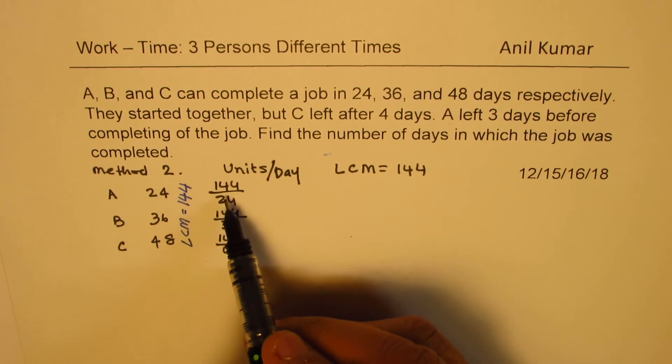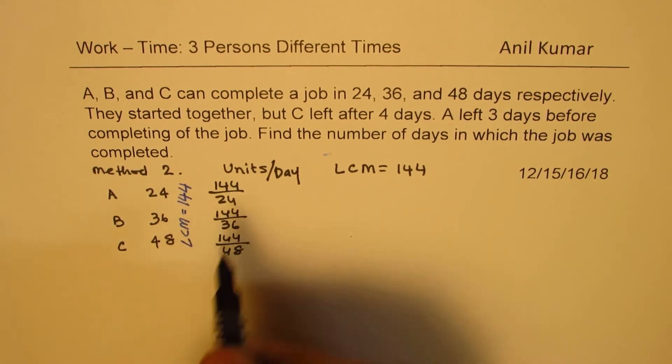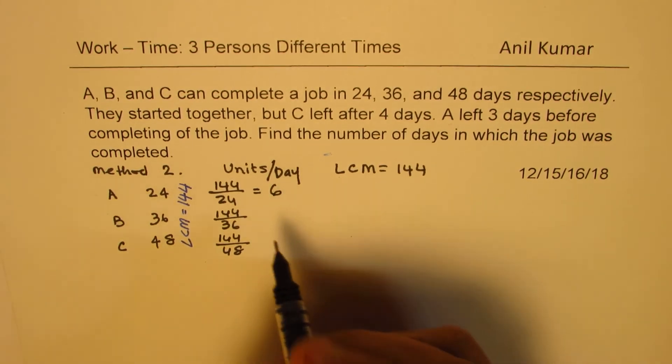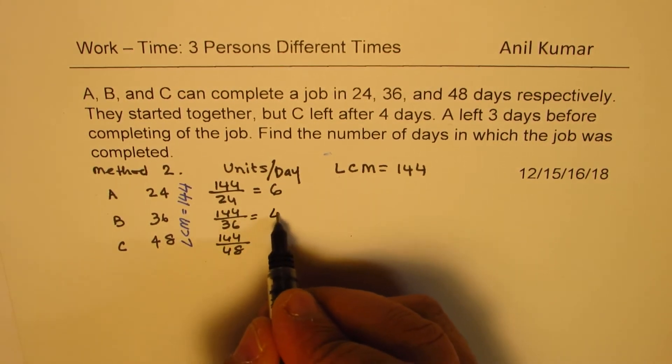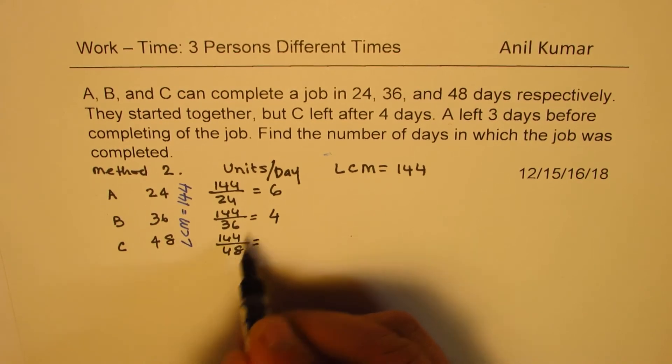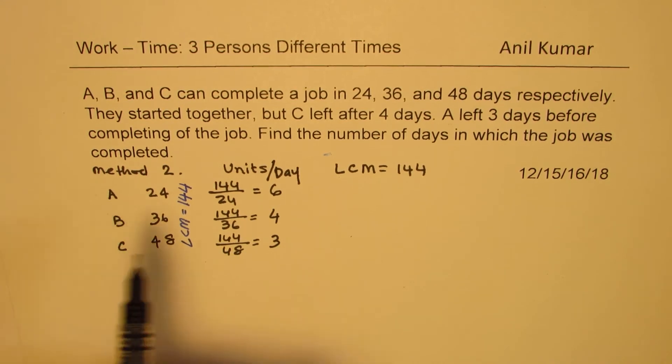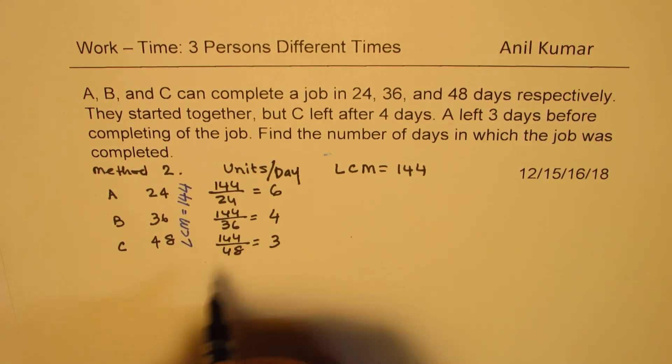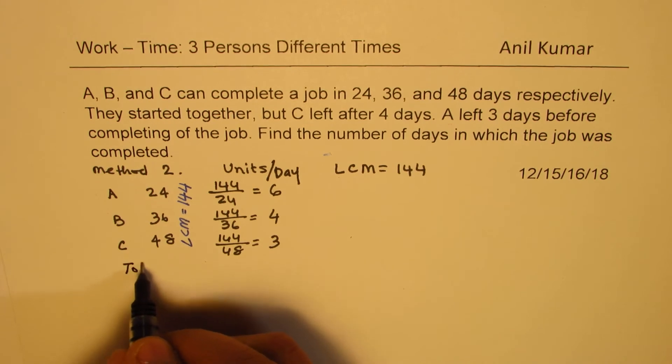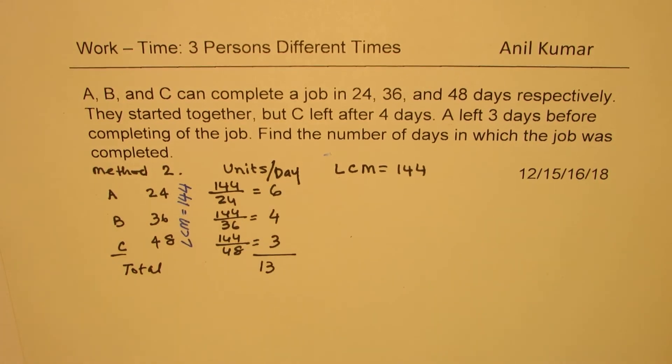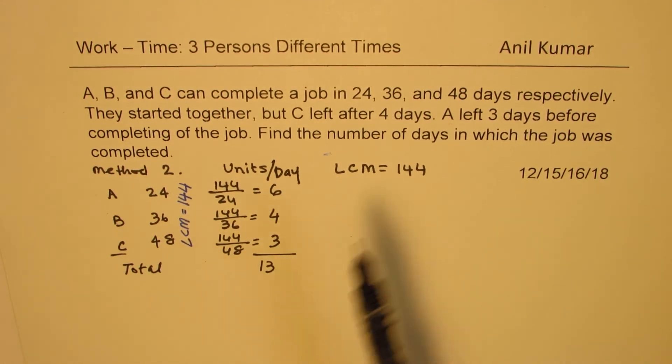144 is 12 times 12. So this will become 6. Similarly, this goes 4 times, and this goes 3 times. So that really means A is performing 6 units per day, B is performing 4 units per day, and C is contributing 3 units per day. Total, if they work together, they give you 13 units per day.